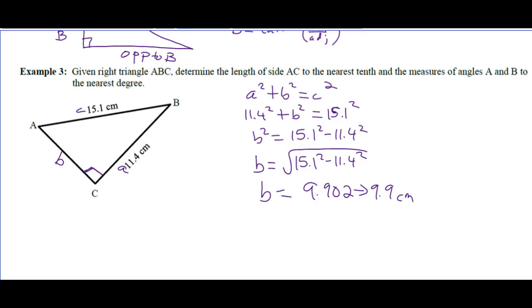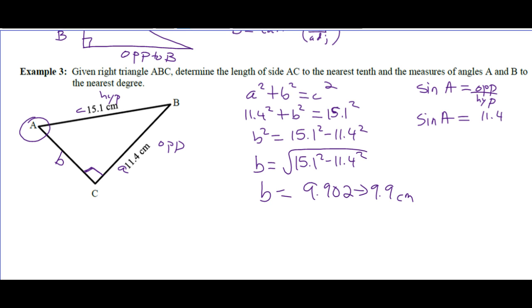If you're trying to figure out angle B and you use 9.9, your angle could be off by enough that it's wrong. So instead, in relation to angle A, I've got opposite and I've got hypotenuse — I'm going to use the sine ratio. The sine of angle A is opposite over hypotenuse. The sine of angle A is 11.4 over 15.1. I'm using the numbers that are given, not the calculated number.